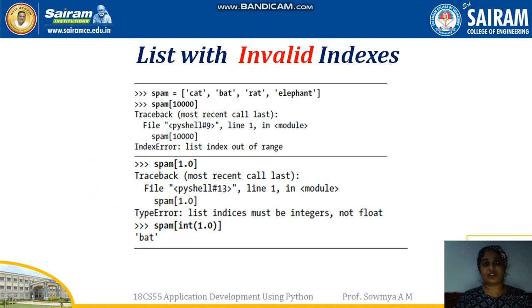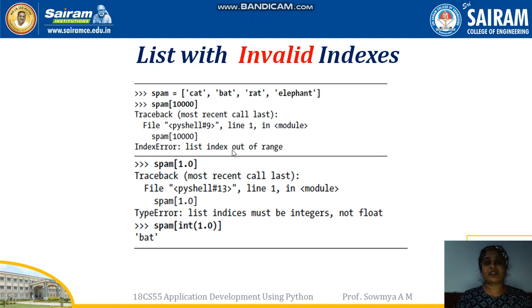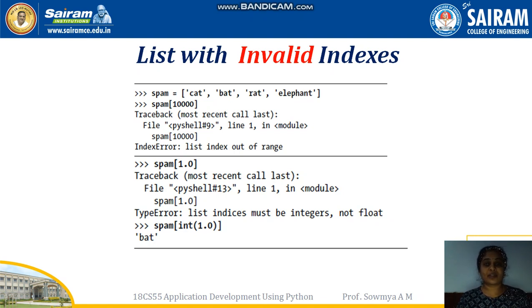Next is invalid indexing. If you have a list of four elements and you try to access a fifth or higher index, a 'list index out of range' error is generated — for example, spam[1000] would cause this error. Also, if you give a float or decimal value as an index such as 1.0, that also generates an error since float values are not accepted for indexing. However, you can use the int() function to convert a float to an integer, which is acceptable.